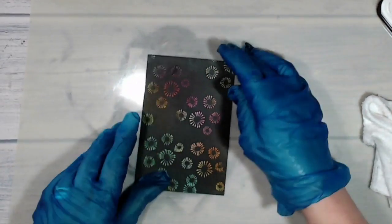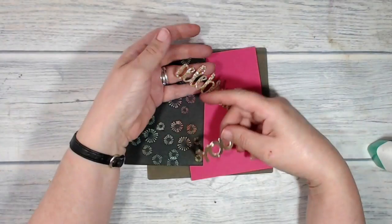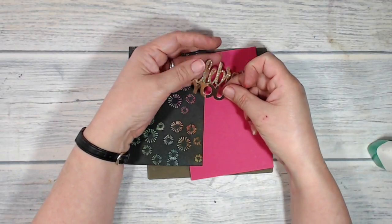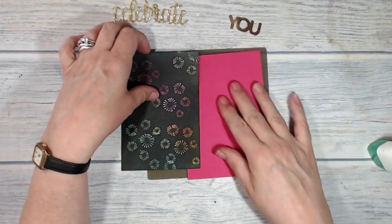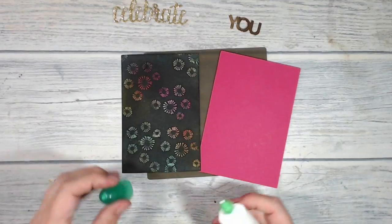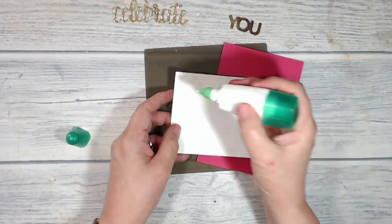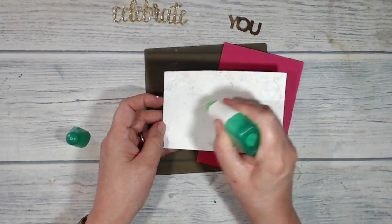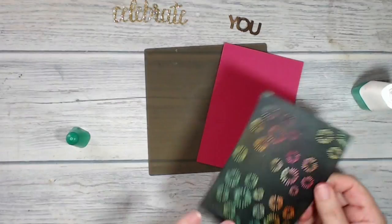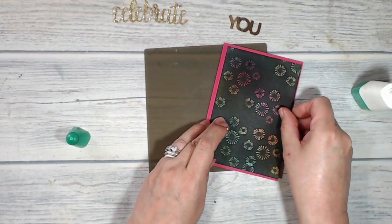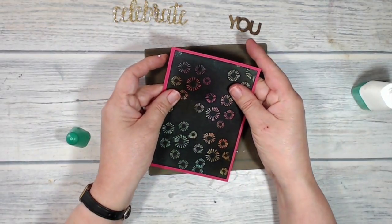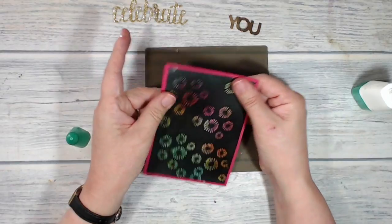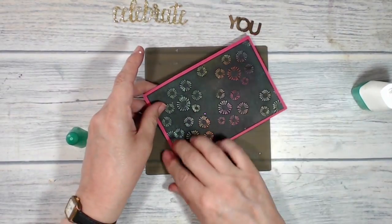And there we are. I went over to the big shot and I cut celebrate out of my gold glimmer and I cut you out of the gold foil. And now I'm going to start bringing everything together. So I have a liquid adhesive because that gives me wiggle room, but for this part of it I could quite easily use snail or I could use tape. Any of those things would work, so I'm just lining that up.